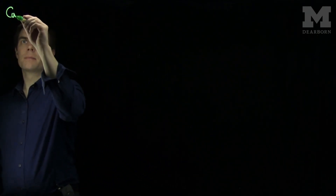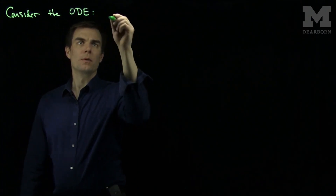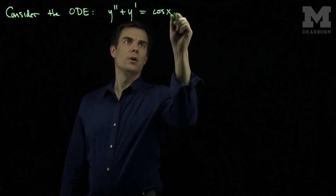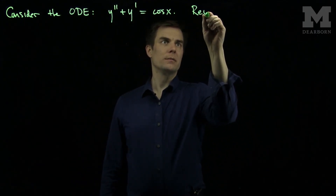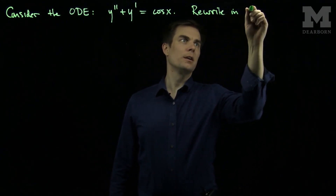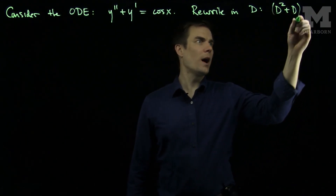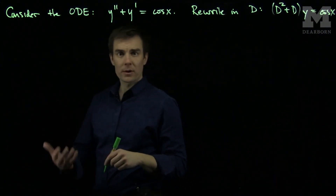Hello students. In this video we'll see an example of how to solve non-homogeneous constant coefficient differential equations by annihilating the right hand side. We're going to consider the ODE y'' plus y' equals cos(x). We will rewrite it in differential operator notation as (D² + D) applied to y equals cos(x).